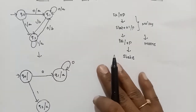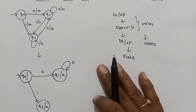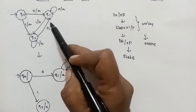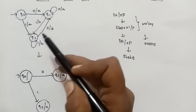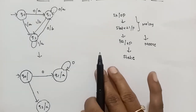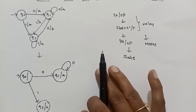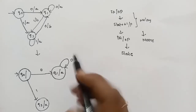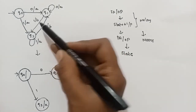Q1 on input 1 goes to Q1 with output B. Next row, Q1 on input 0 goes to Q2 with output B.